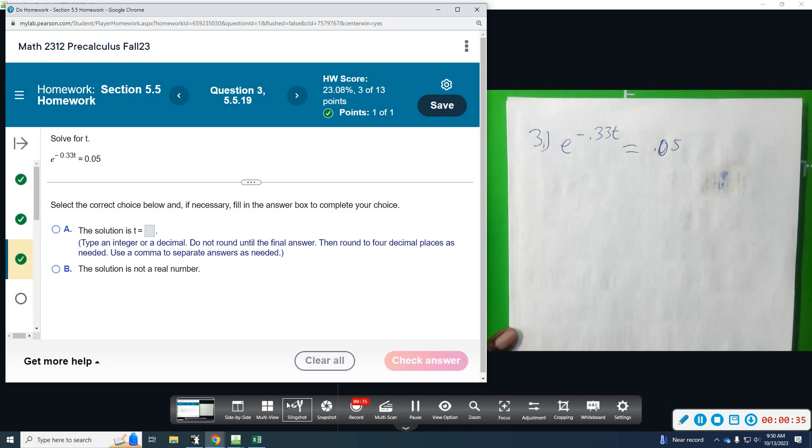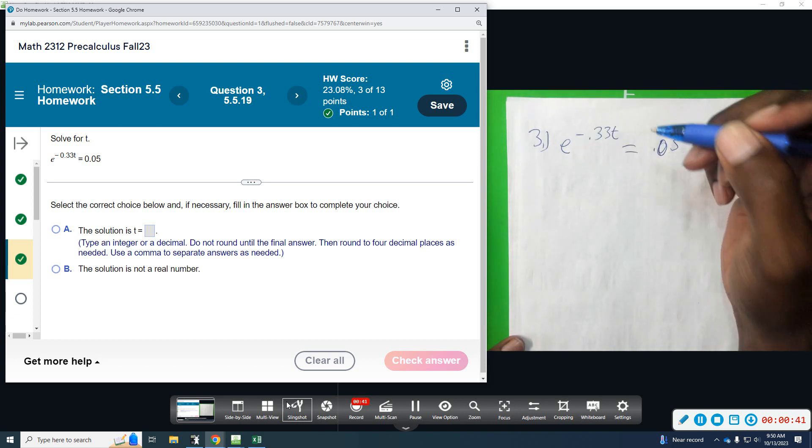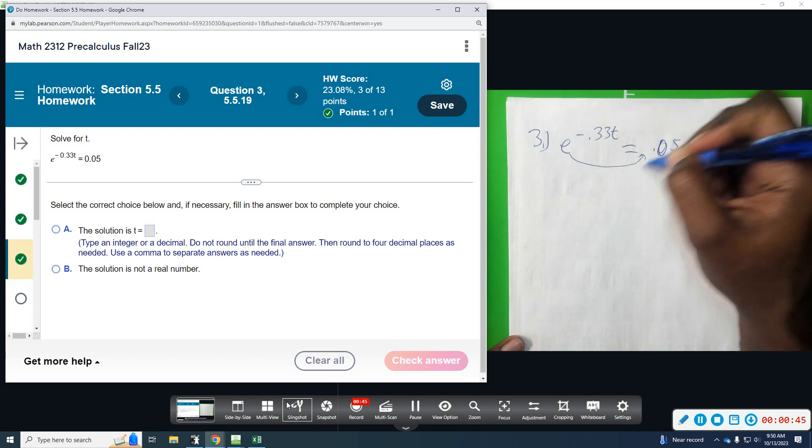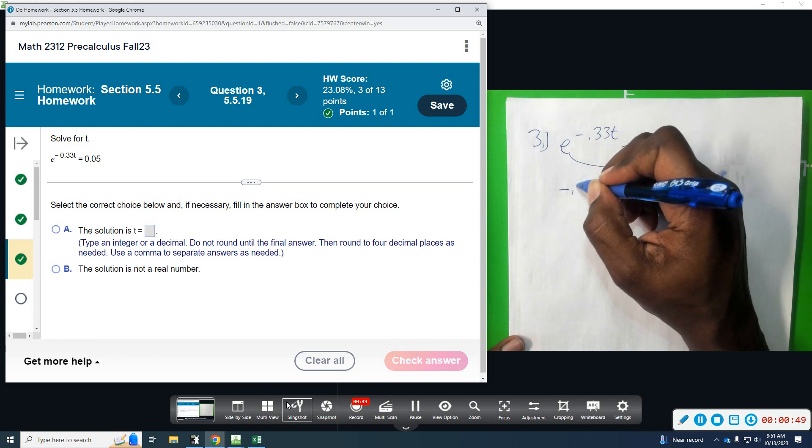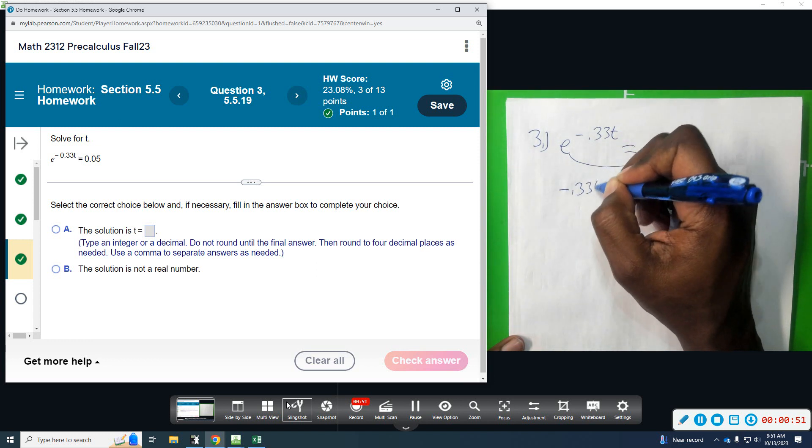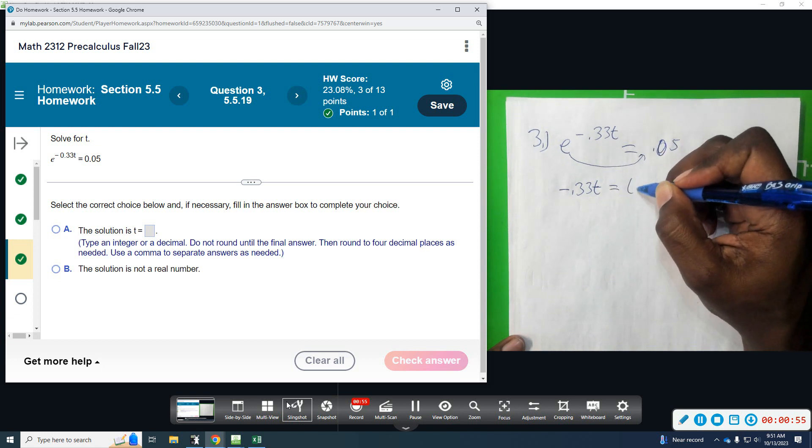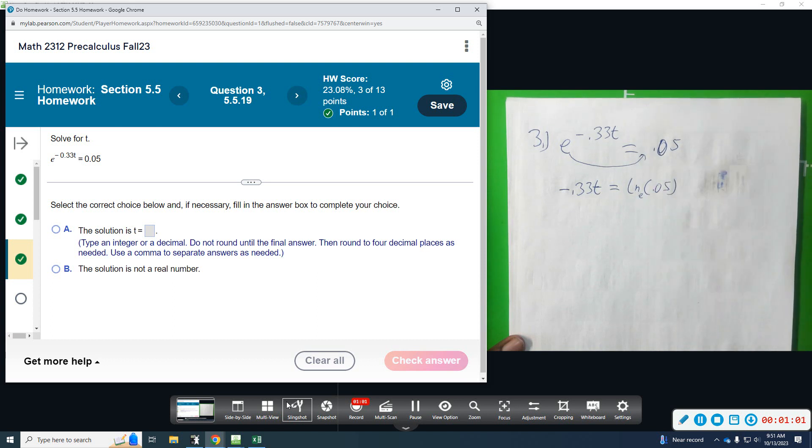So this would be the same idea as applying a natural log to both sides, but we're going to take a different approach. We're going to write this in log form. So we're going to take this e, move it over, and it's going to become natural log. So that would mean we would have negative 0.33t equals, this would now be ln of 0.05. Okay, so that's understood base e whether you write it or not.